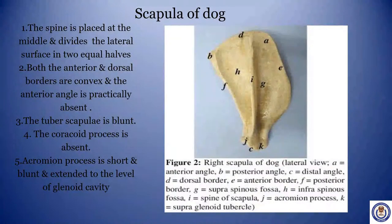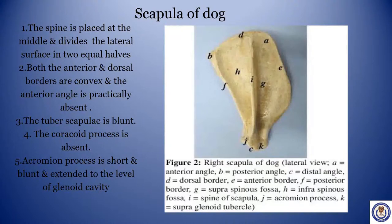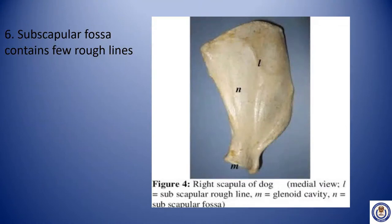Scapula of dog. The spine is placed at the middle and divides the lateral surface into two equal halves — the ratio is 1 to 1. Both the anterior and dorsal borders are convex, and the anterior angle is practically absent. The tubus capillae is blunt. The coracoid process is absent. Acromion process is short and blunt and extends to the level of the glenoid cavity. Subscapular fossa presents few rough lines.